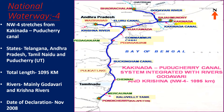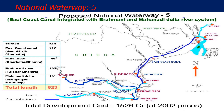National Waterway Four, NW4, stretches from Kakinada to Pondicherry. The states covered are Telangana, Andhra Pradesh, Tamil Nadu, and the union territory of Pondicherry. The total length is 1095 kilometers. The main rivers are the Godavari and Krishna, and there is also the Buckingham Canal. The date of declaration was November 2008.